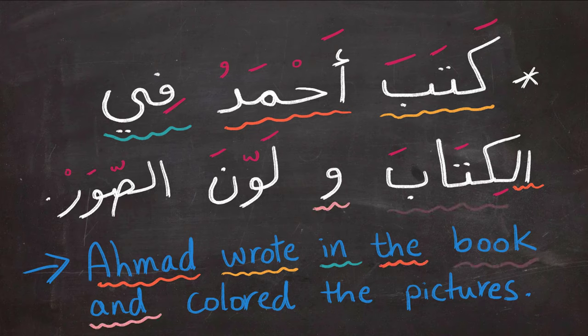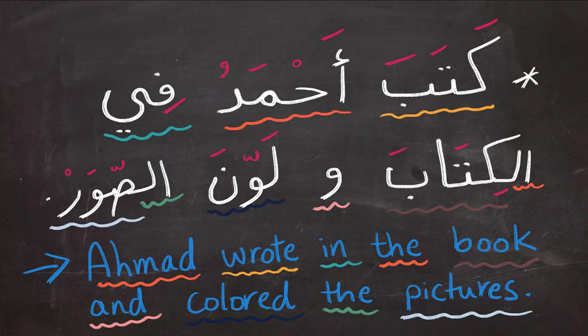وَا means 'and,' لَوَّنَ means 'colored,' أَلْ means 'the,' and سُورَ means 'pictures.'